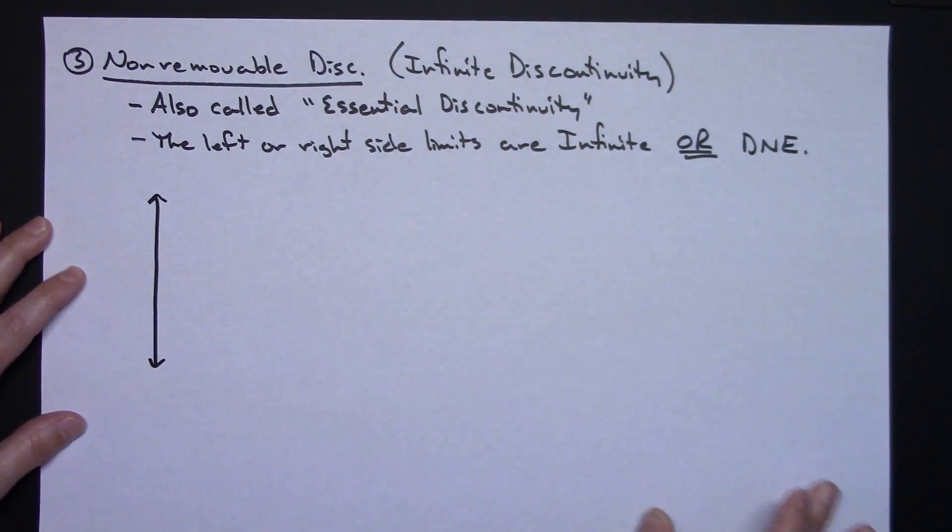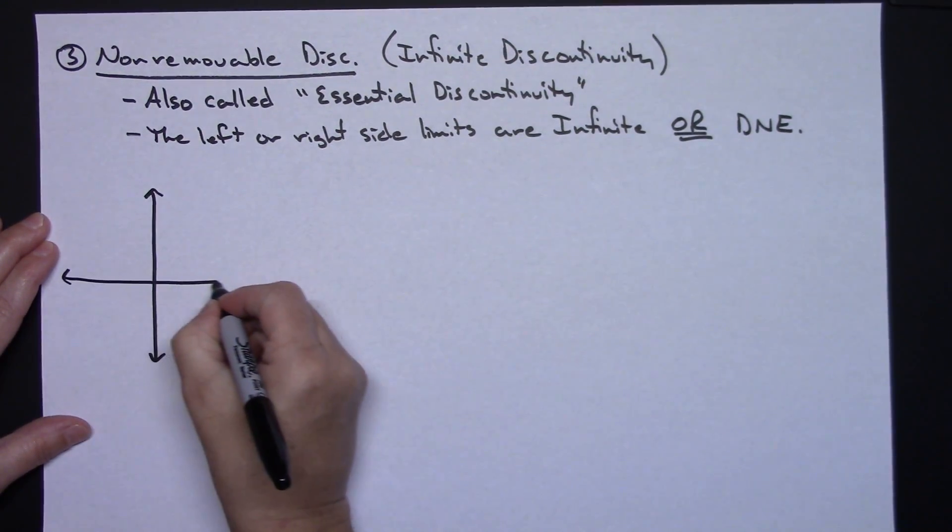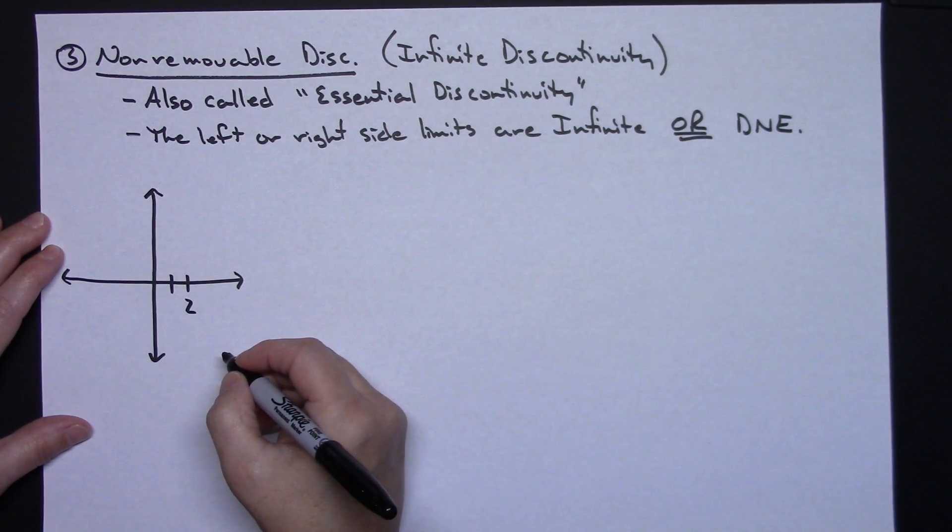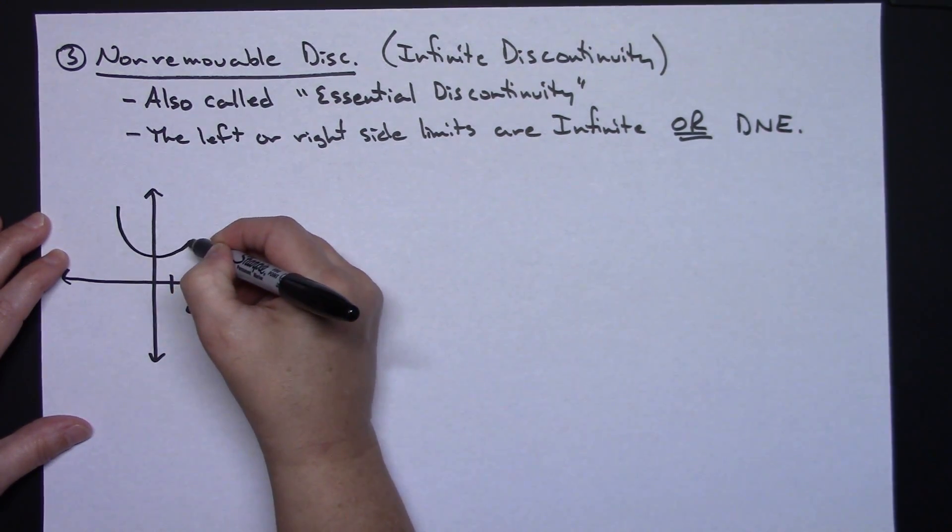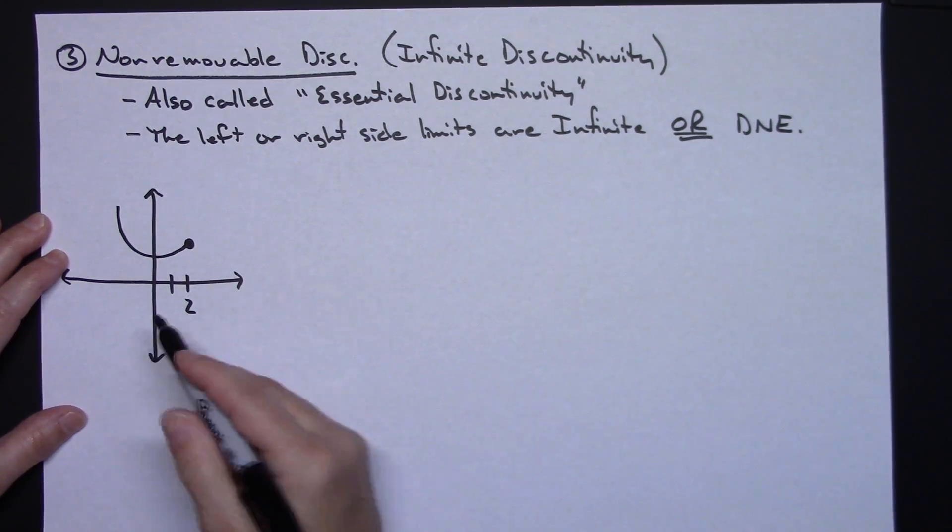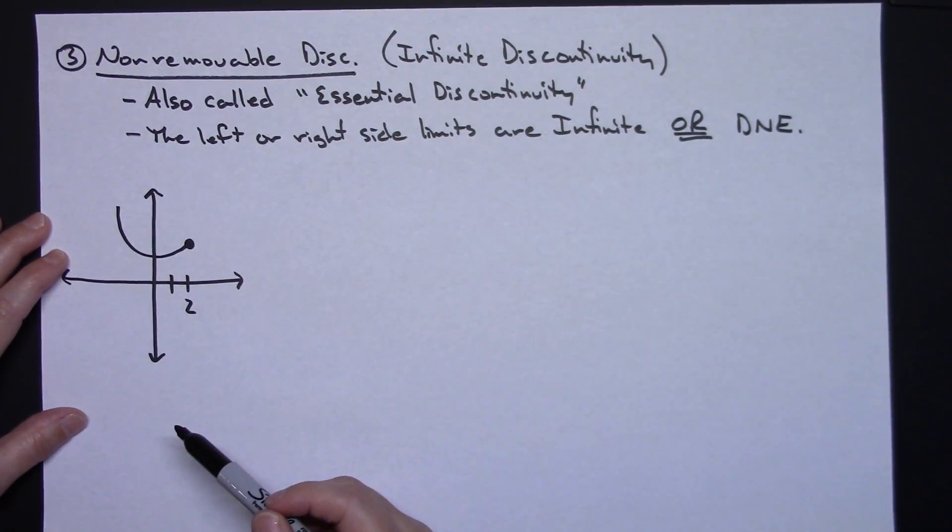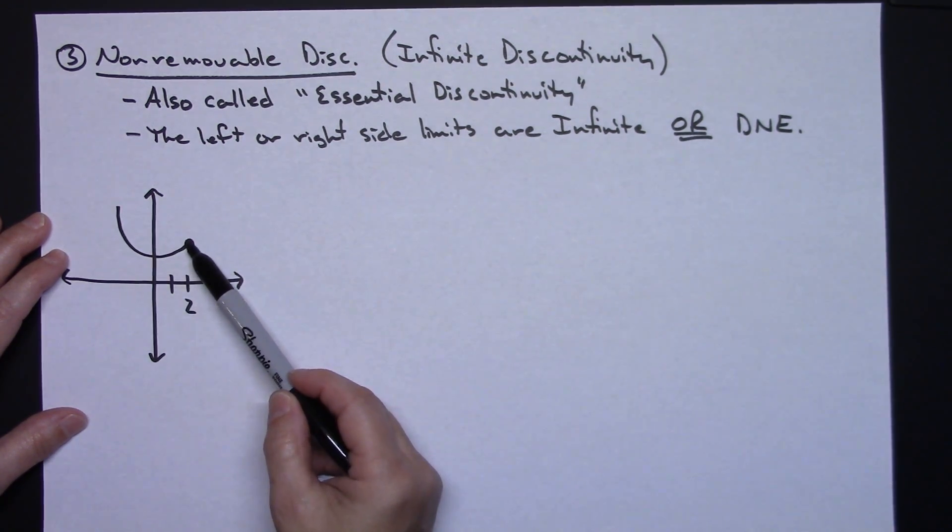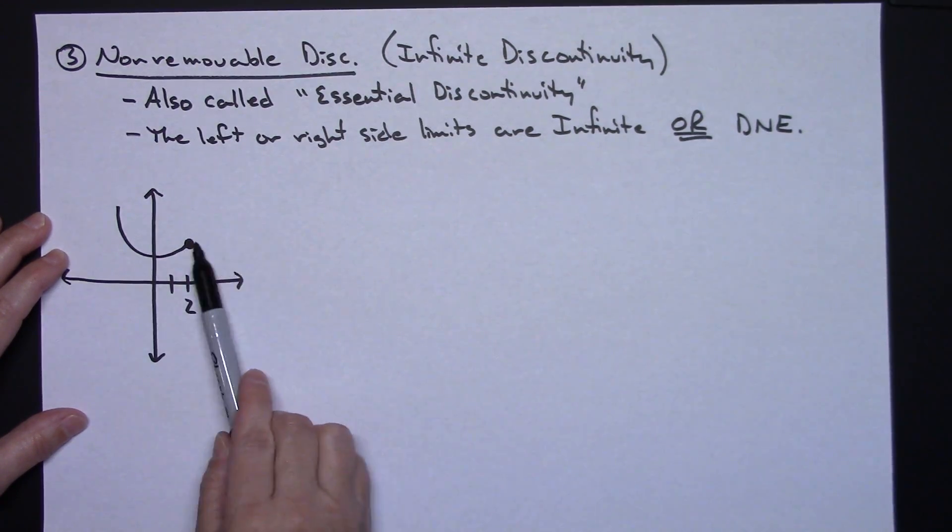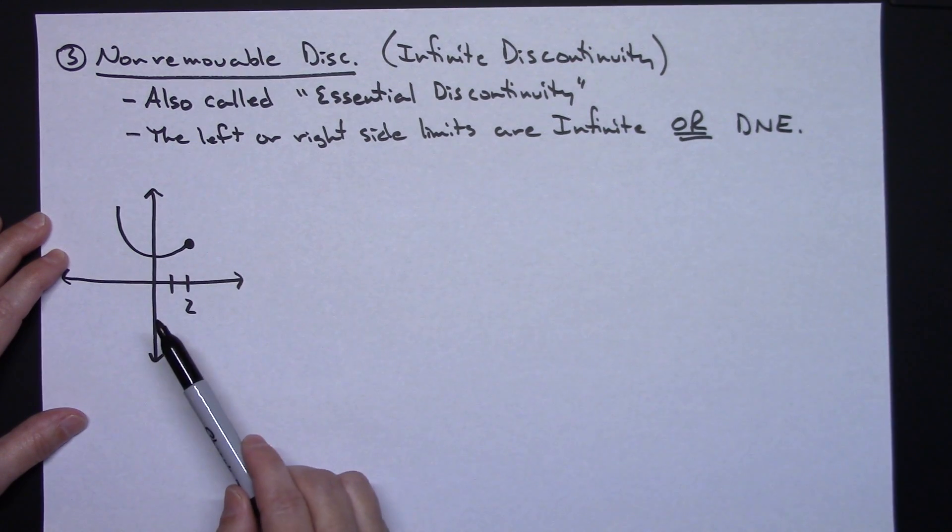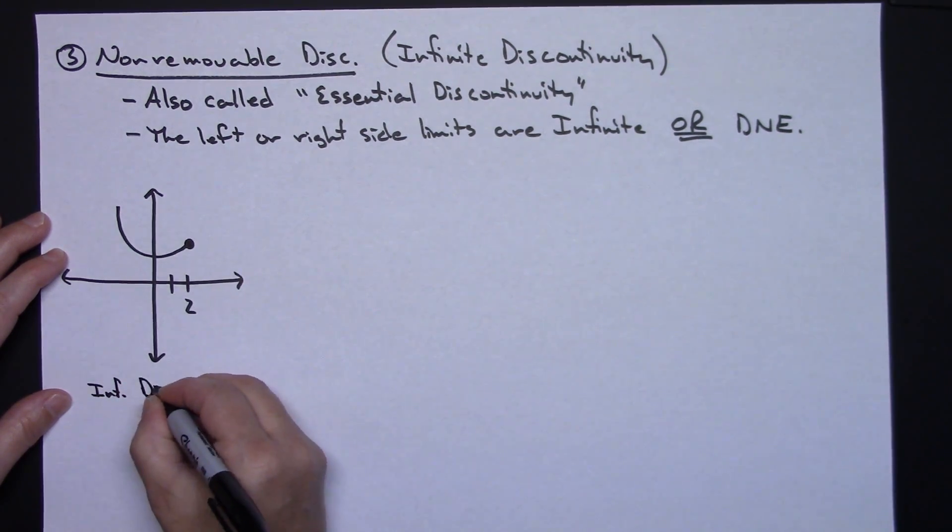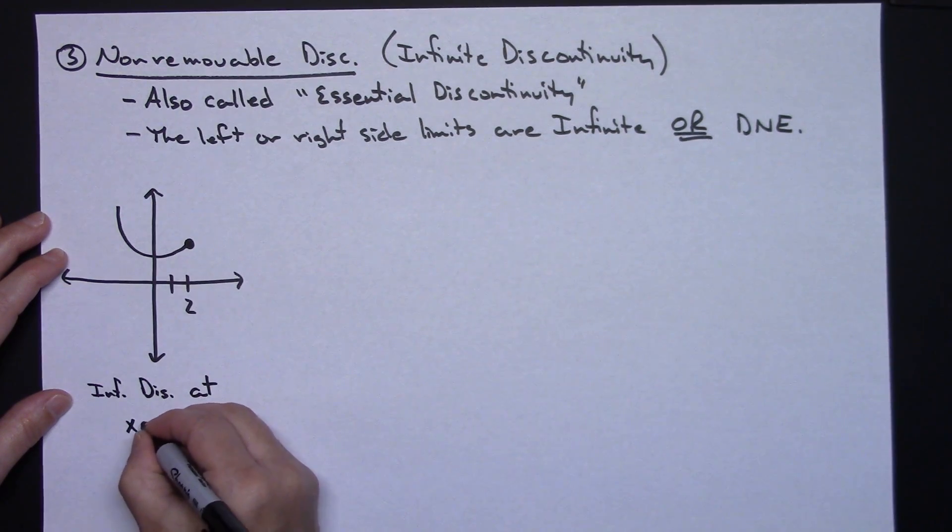Let's draw some sketches. Maybe on this first one, let's say my infinite discontinuity is going to occur at 2. I might have a graph that just simply comes and looks like this. Now this would qualify as an infinite discontinuity because my limit from the left here does exist, but there is no limit from the right. So my limit from the right does not exist. So therefore, I have an infinite discontinuity at x equals 2.